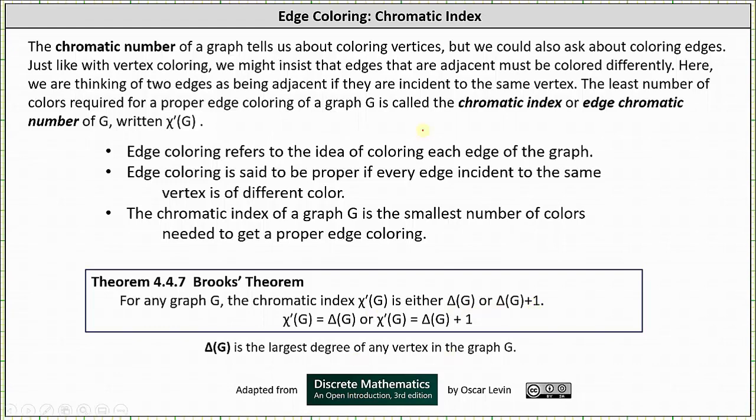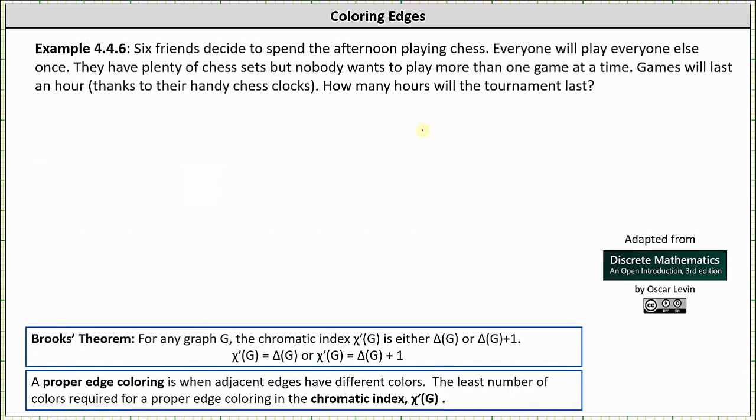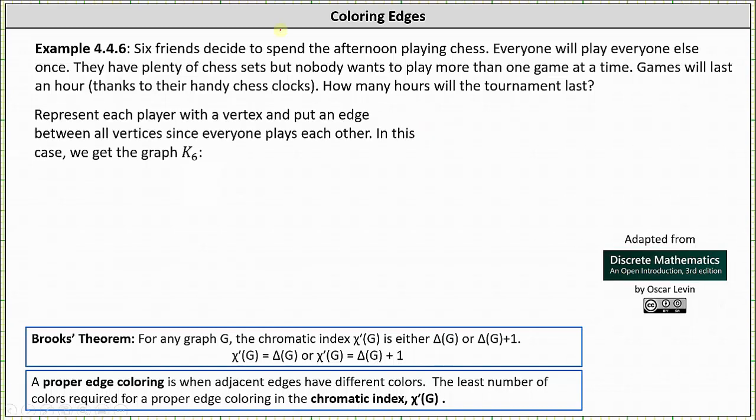Let's look at an example. Six friends decide to spend the afternoon playing chess. Everyone will play everyone else once. They have plenty of chess sets, but nobody wants to play more than one game at a time. Games will last one hour. How many hours will the tournament last? We begin by representing each player with a vertex and put an edge between all vertices since everyone plays everyone once. In this case we get the graph K₆, the complete graph on six vertices shown here on the right.